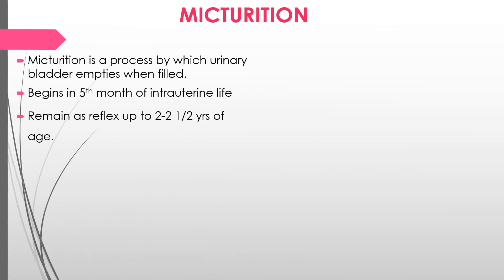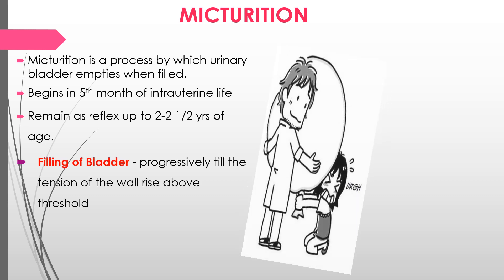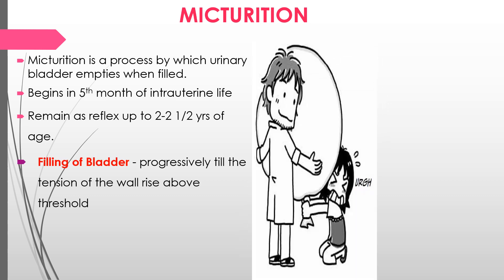Micturition is the process by which the urinary bladder empties when filled. It begins in the 5th month of intrauterine life and remains as a purely spinal reflex up to 2 to 2.5 years of age, after which voluntary control progressively develops.